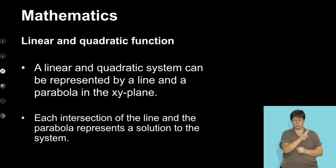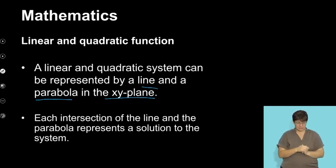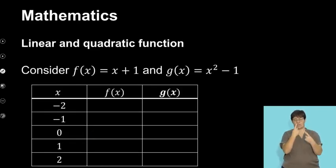And then a linear and a quadratic system now, if I combine a linear graph and a quadratic graph, this can be represented by a line and a parabola in the xy plane, the Cartesian plane. And then each intersection of this, which is the line in the parabola, represents the solution to the system. Solution in what sense? Where the graphs are intersecting one another. Let's make a typical example with this.